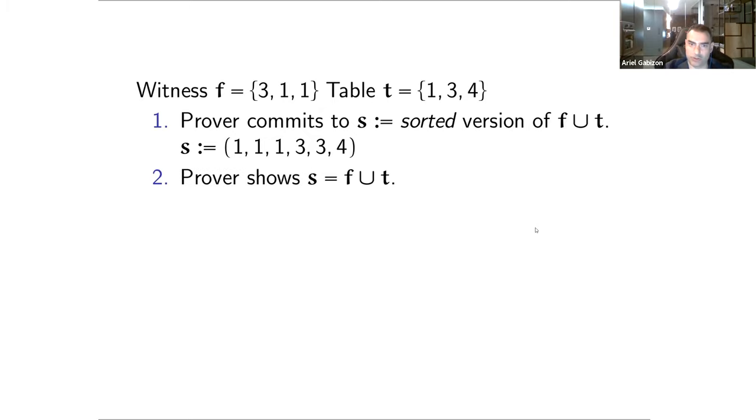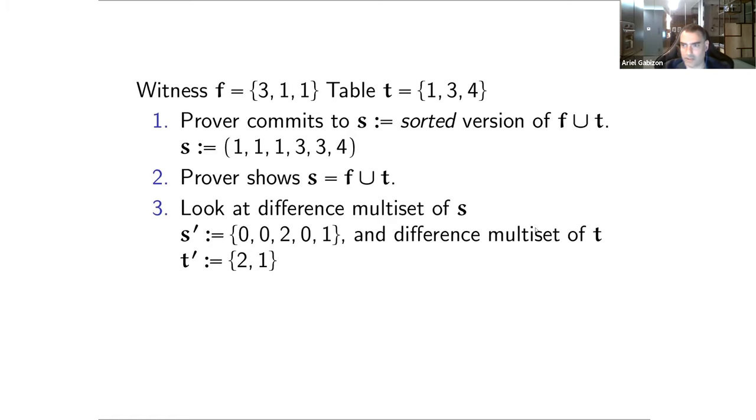And now the prover will show that as a multi-set, S is indeed equal to F union T. So how will he do this exactly with this multi-set check that I mentioned. Now we know that they're equal as multi-sets. But that doesn't tell us so far that the values of F are contained in T. That doesn't say that at all.